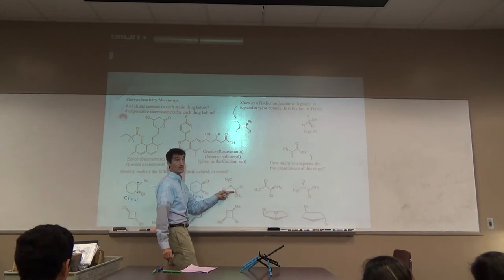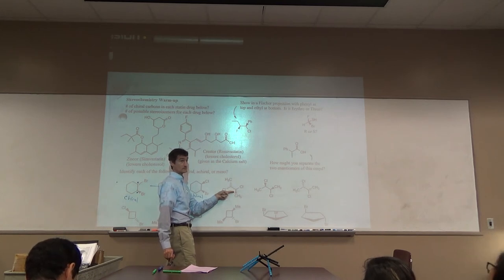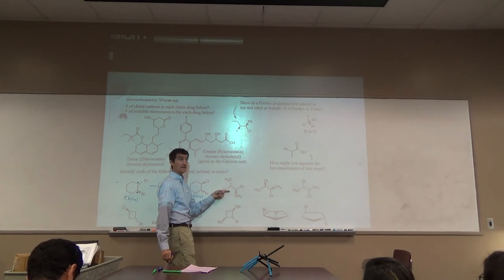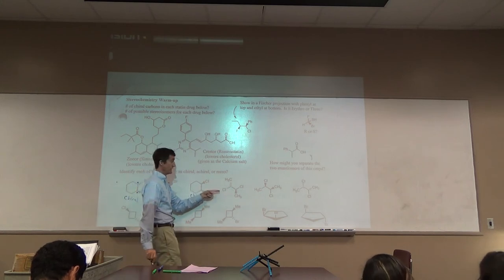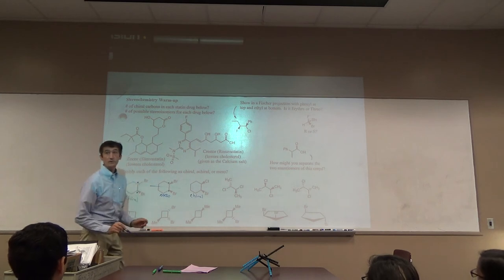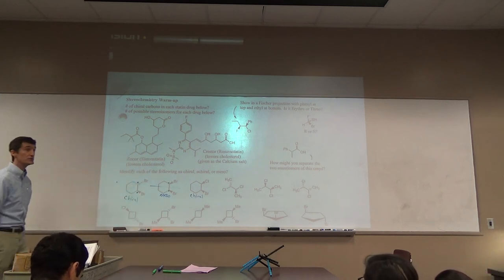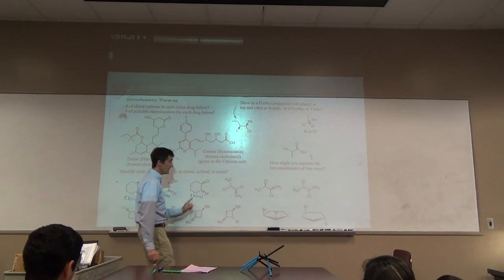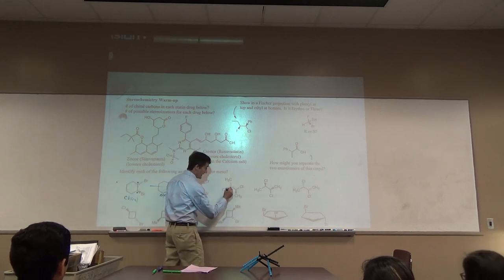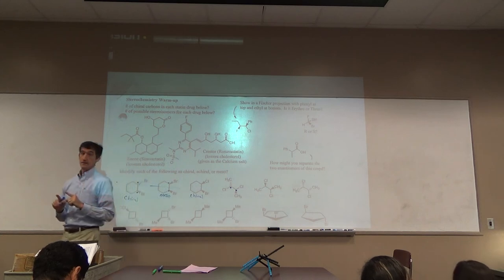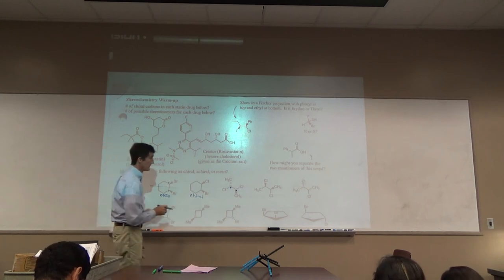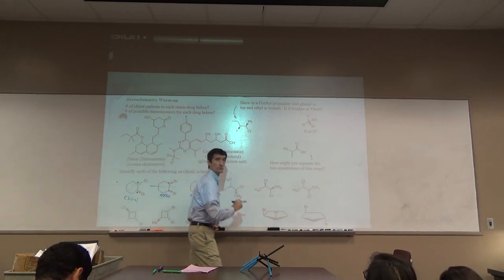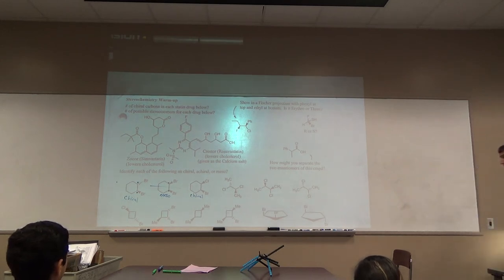A little more difficult here because these things can freely rotate. What do you want to do to maybe make it easier? I'd recommend the Fisher. Draw these in Fishers and then look at them — much easier to find planes of symmetry in Fishers. It has two chiral carbons, but that doesn't mean it's chiral as a whole necessarily — it could be meso. Please do those and practice your Fishers.